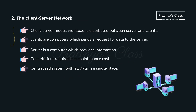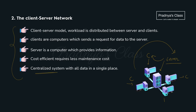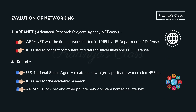In a client-server network, one device acts as the server — the main computer — and other computers are called clients. The client sends a request to the server, which processes it and responds. All clients depend on the server, so it is called a centralized system. It is cost efficient, and the server provides information to all the clients. Remember, the first network is ARPANET — Advanced Research Project Agency Network.